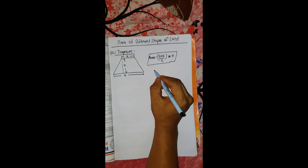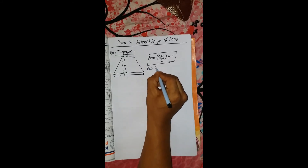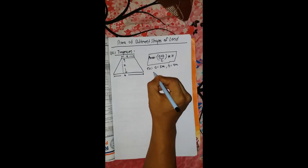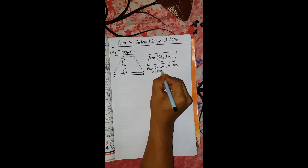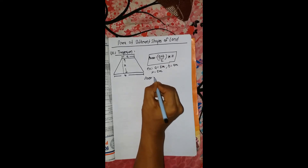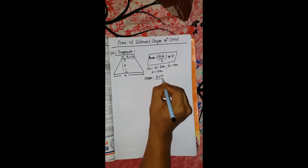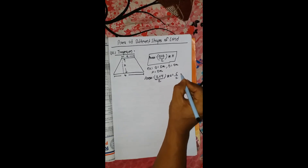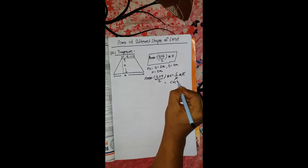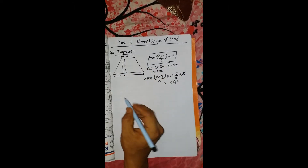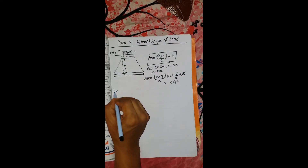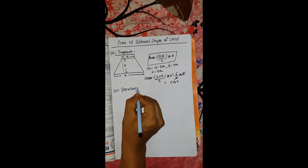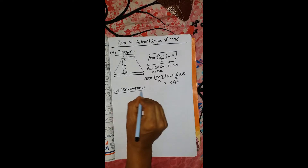For example, A is equal to 2 meters, B is equal to 4 meters, and height h is equal to 2 meters. Area is equal to (2 plus 4) divided by 2, into 2 — that gives 6 square meters.